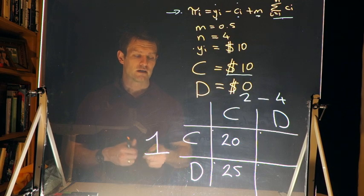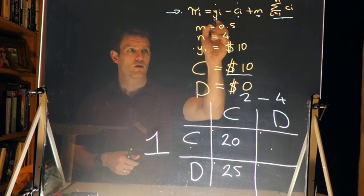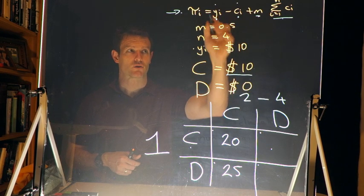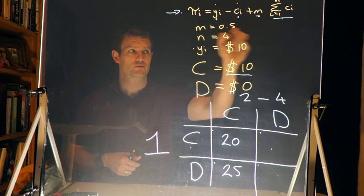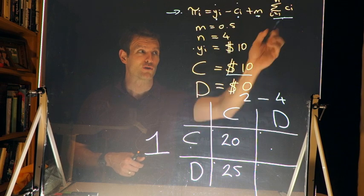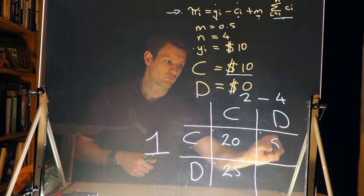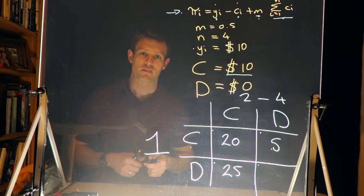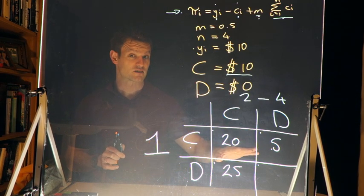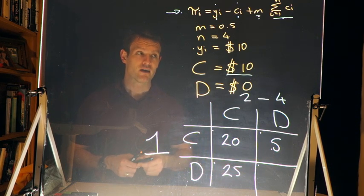What happens if I contribute and no one else does? I start with ten dollars and give ten to the public good, leaving zero from those first two terms. No one else contributes, so there's only ten dollars in the public good. Ten times 0.5 leaves me with five dollars. So I contributed everything and ended up with only five dollars.